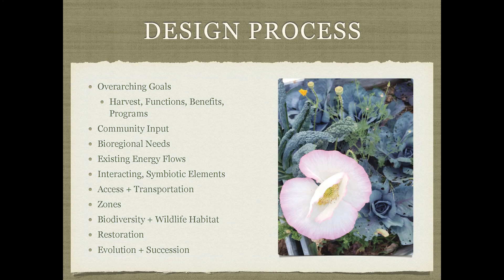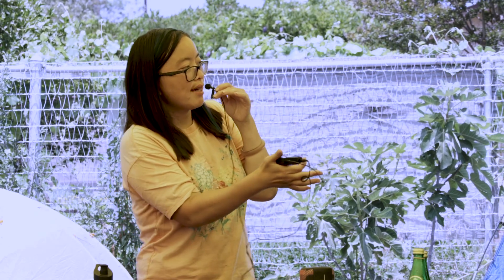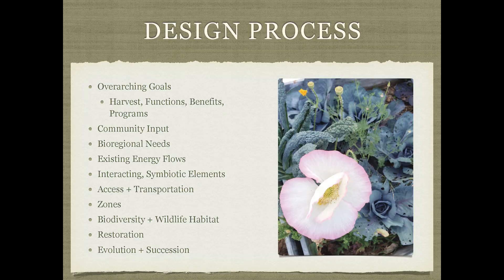Think about bioregional needs — are there other large farms, orchards, or compost facilities already in the region? If so, you may not need to emphasize that as much and can focus on what the community still lacks. Consider existing energy flows: where existing trees create sun and shade patterns, what the wind pattern is like. Always do a soil test when entering a new space to see what amendments or remediation may be needed. Think about symbiotic elements that can be mutually beneficial when implemented together.